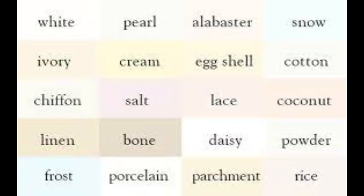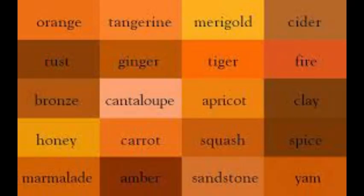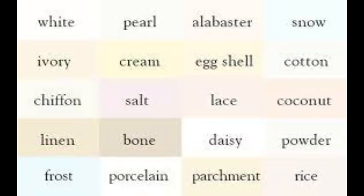Here is the chart with its shades. In order from top to bottom and left to right, they are: white, pearl, alabaster, snow, ivory, cream, egg shell, cotton, tiffen, salt, lave, coconut, linen, bone, daisy, powder, frost, porcelain, parchment, and rice.